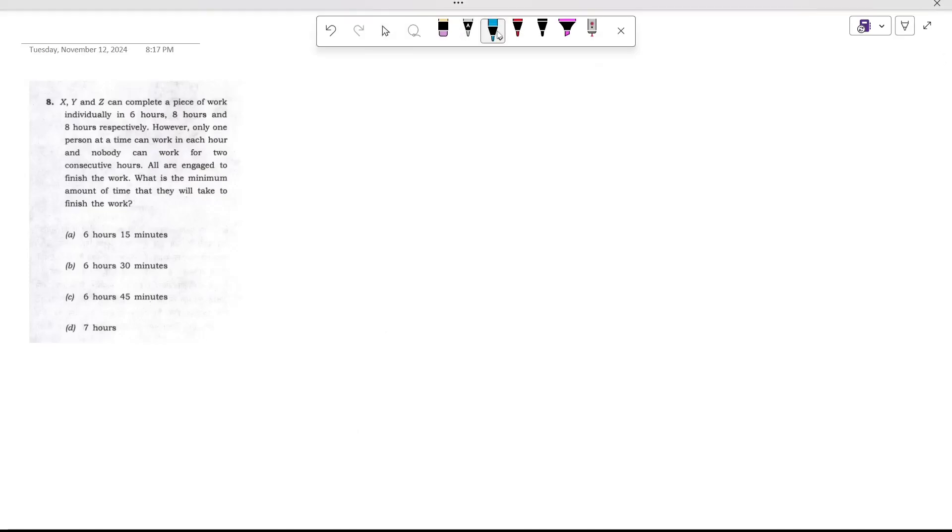Let's solve this question. It's given that X, Y, Z can complete a piece of work individually in 6, 8, and 8 hours. That means the total work comes out to be 24, and their efficiency would be 4, 3, and 3 respectively. This is the efficiency.